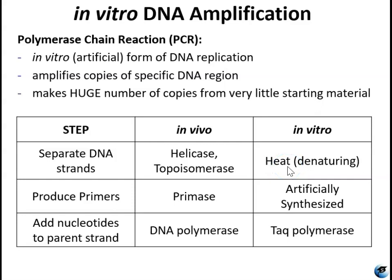Now in vitro, instead of using enzymes to separate the DNA strands, we use heat. Phosphodiester bonds hold the sugar phosphate backbone together — those are covalent bonds, which are relatively strong — and hydrogen bonds hold the nucleic acids in the middle together, and hydrogen bonds are relatively weak. So you can actually denature those hydrogen bonds using heat at specific temperatures, usually somewhere between 90 and 96 degrees. It's hot enough to break the hydrogen bonds but not so hot that it breaks the phosphodiester bonds, so the sugar phosphate backbone remains intact.